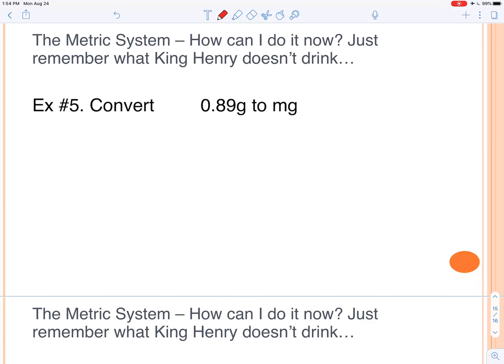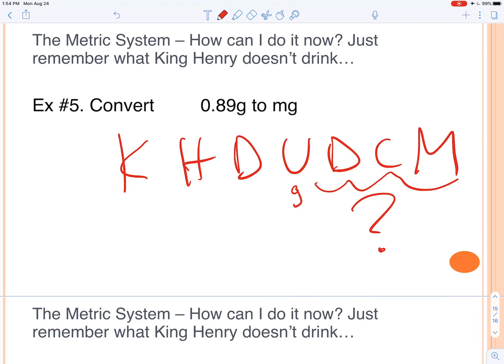A couple more examples here. Go ahead and try this one. So grams are going to be here. That's our base unit with no prefixes. And we're going to move it one, two, three spots to the right. So our final answer is going to be 890 milligrams. Again, one, two, three.